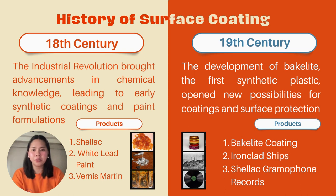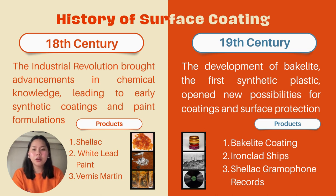The 19th century was a dynamic period in surface coating history, marked by significant technological advancements and a growing understanding of chemistry. Innovations in coating materials and application methods continued to expand, catering to diverse industries and driving further progress in the art and science of surface coatings. Products from the 19th century include Bakelite coatings used to insulate electrical components and protect them from moisture and heat; iron-clad ships, early naval vessels coated with iron to protect against corrosion and damage; and shellac gramophone records, coatings of shellac on records for improved sound quality and durability.